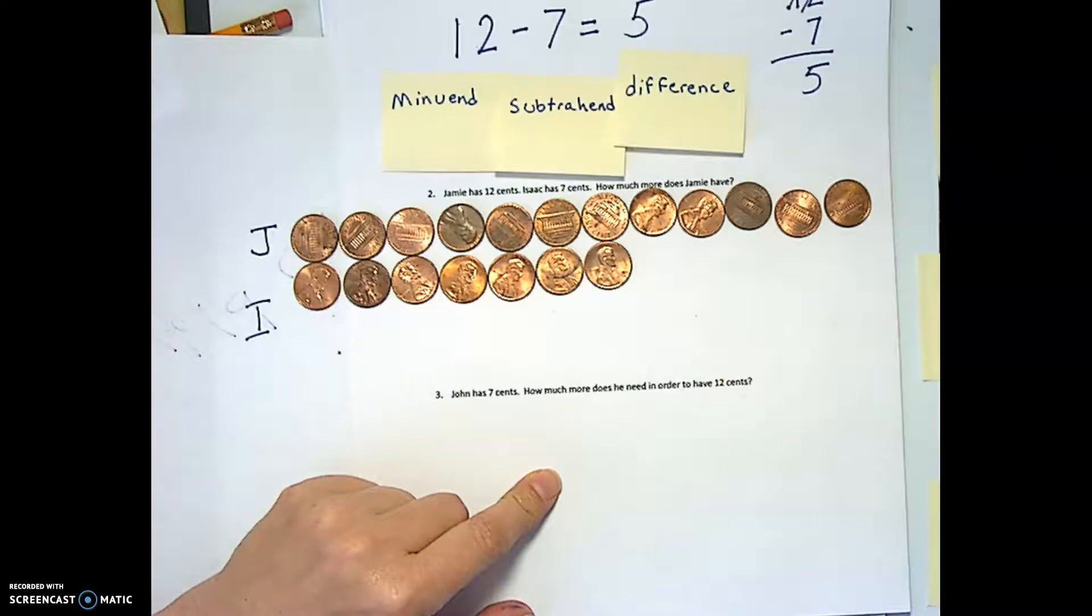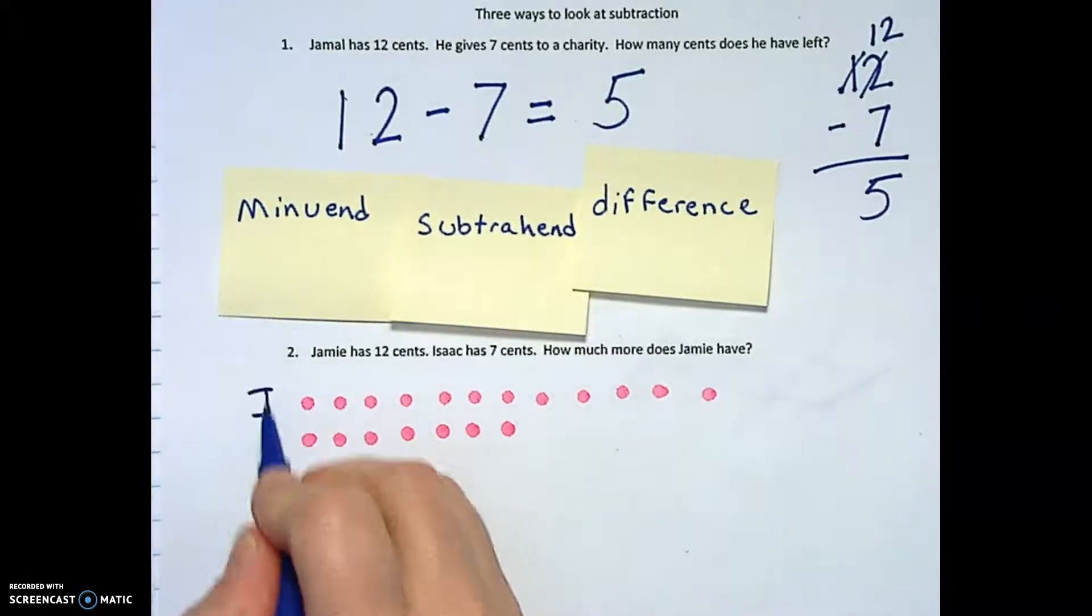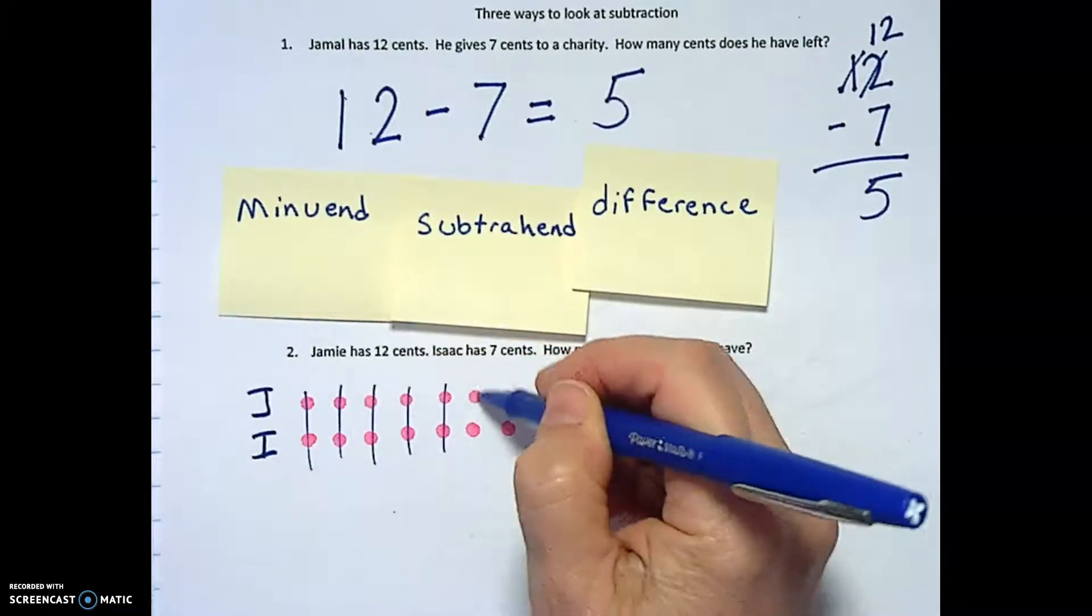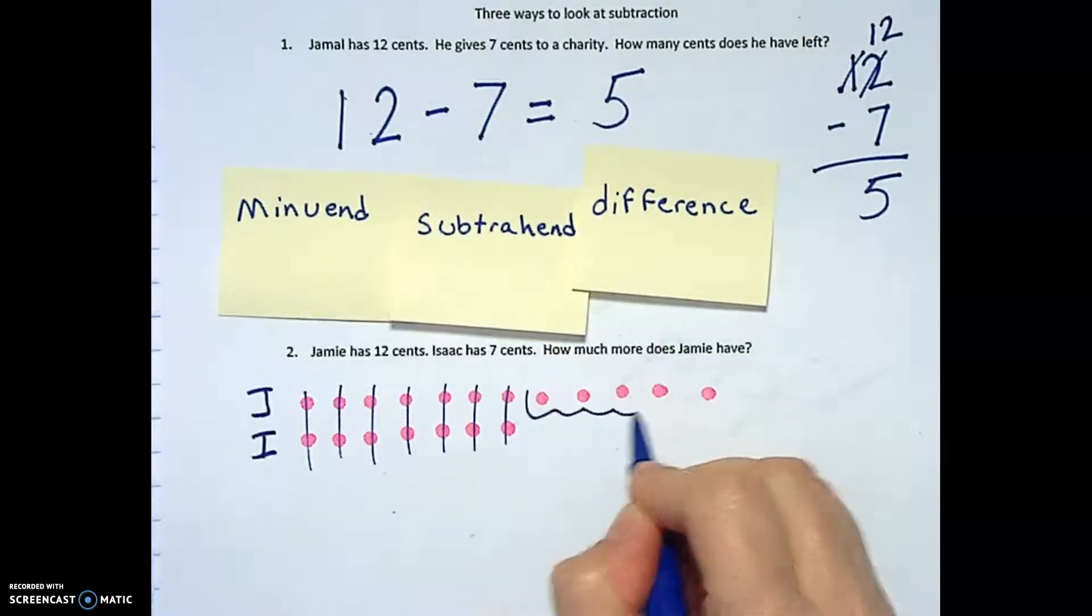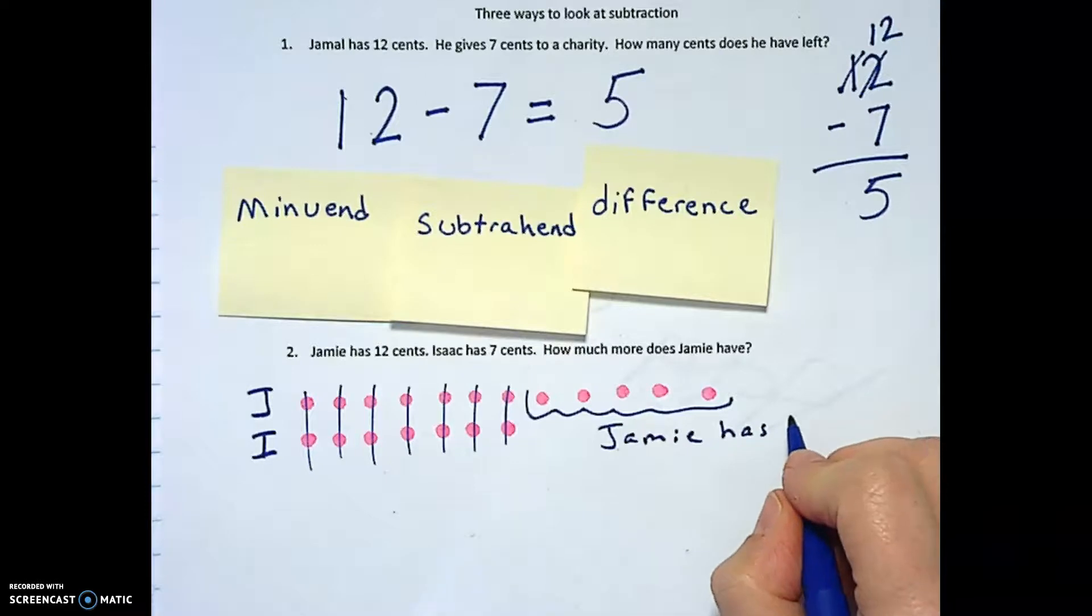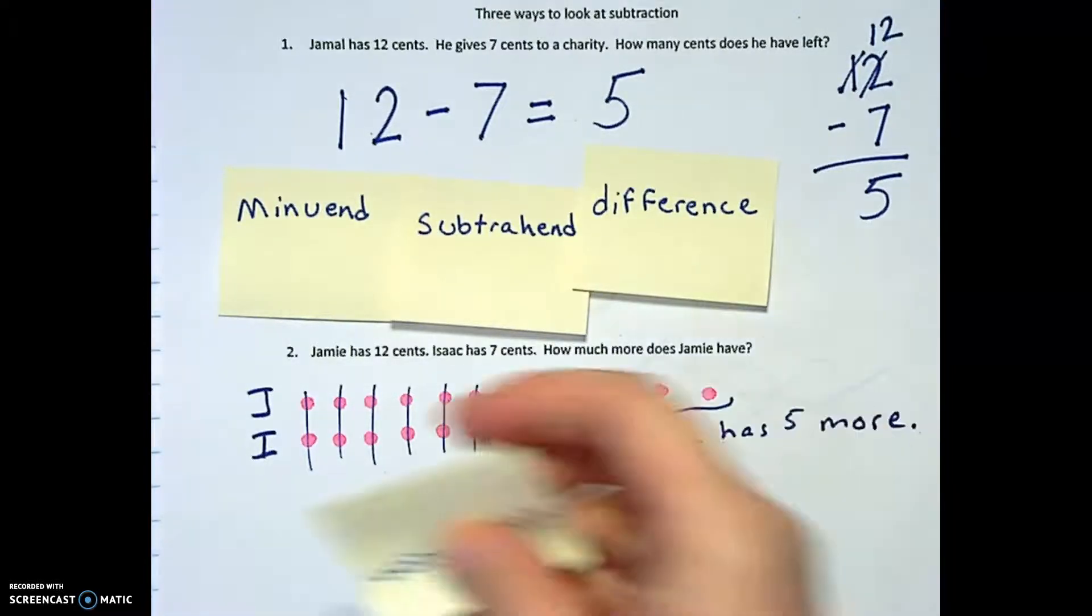So that's called the comparison concept. Now I've just drawn pink dots to represent the pennies we had. These were Jamie's pennies. These were Isaac's pennies. They have this many pennies, the same, and then Jamie has this many more. Jamie has five more than Isaac or whatever you want to say. So this one is called the comparison concept.